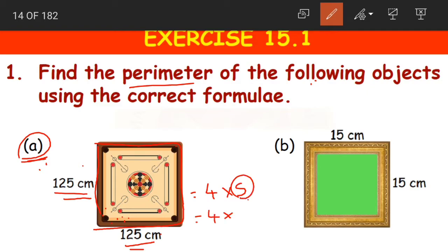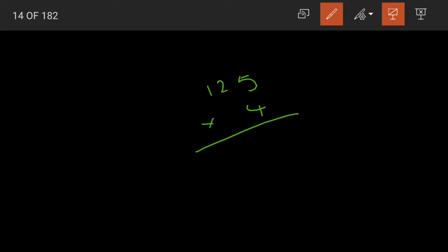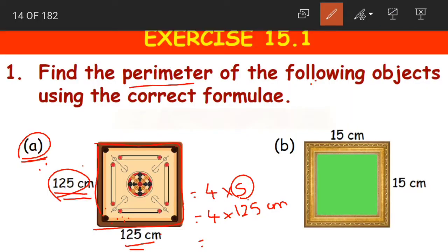S is the length of any one side of the square, that is 125 cm. So 4 into 125 cm. When we multiply: 4 fives are 20, 4 twos are 8 plus 2 is 10, carry 1, 4 ones are 4 plus 1 is 5. The answer is 500 cm.